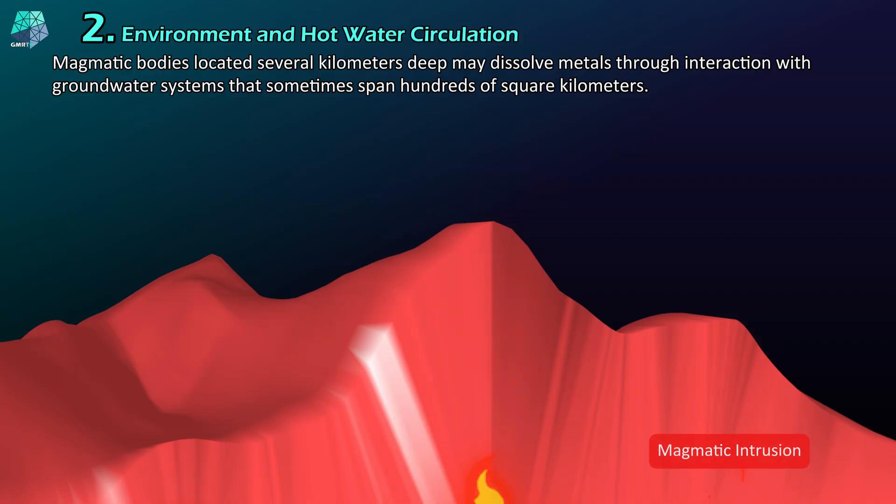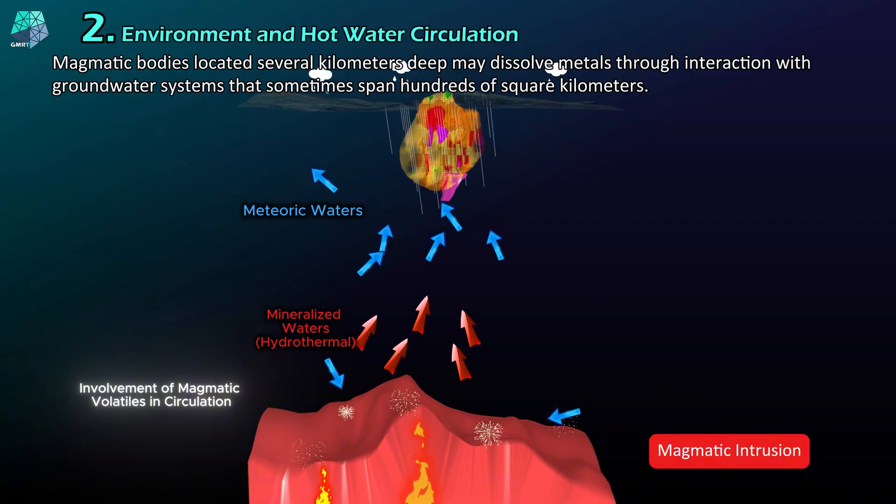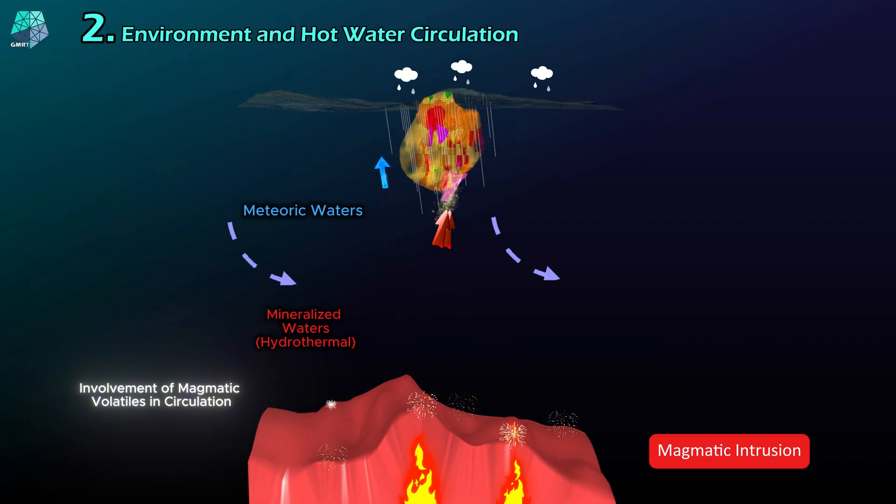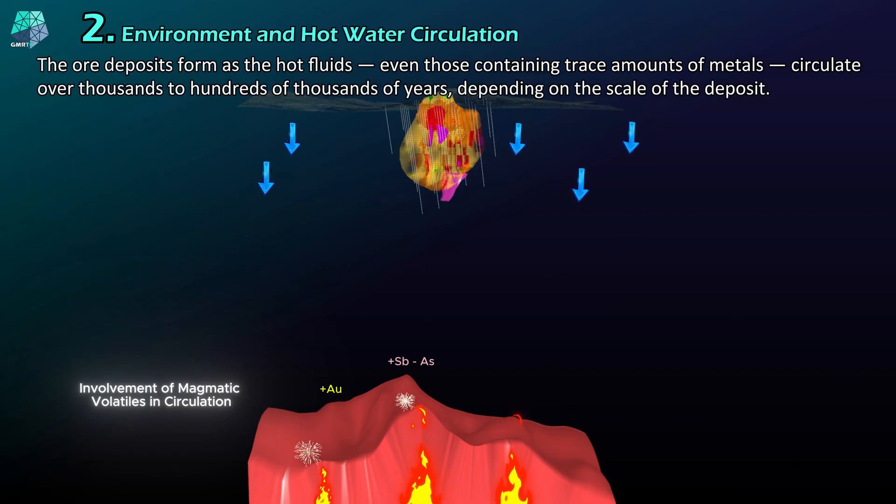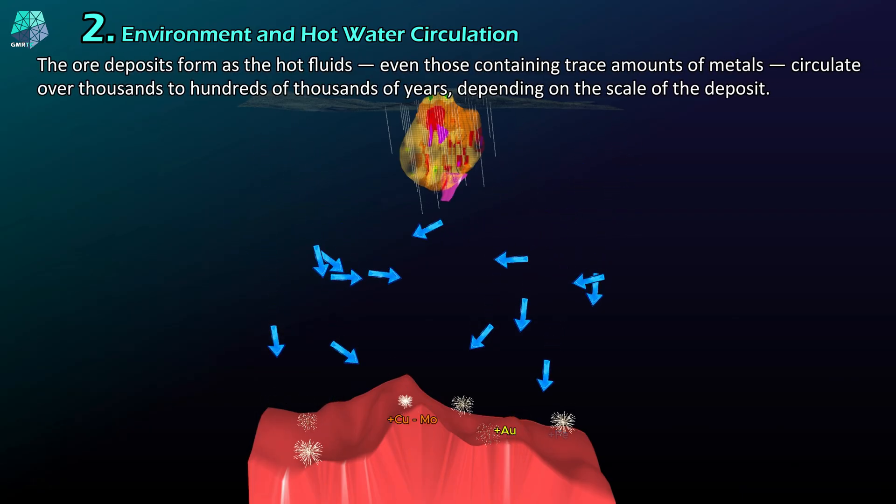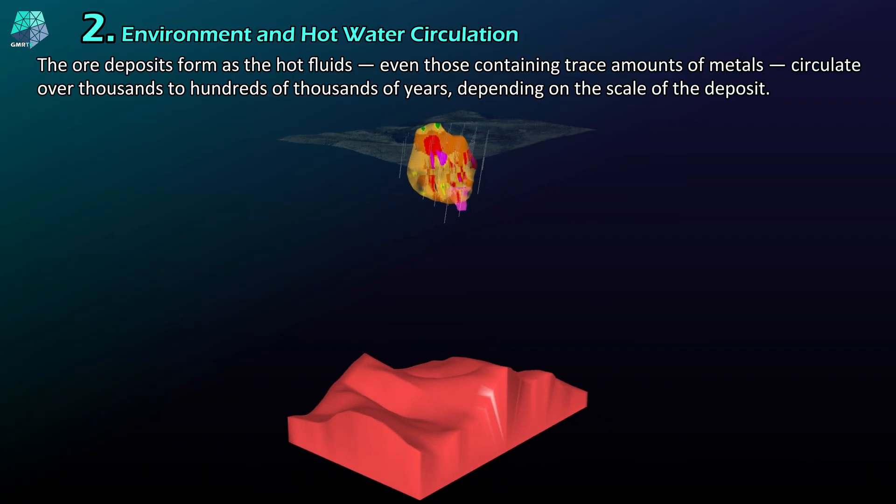Magmatic bodies located several kilometers deep may dissolve metals through interaction with groundwater systems that sometimes span hundreds of square kilometers. The ore deposits form as the hot fluids, even those containing trace amounts of metals, circulate over thousands to hundreds of thousands of years, depending on the scale of the deposit.